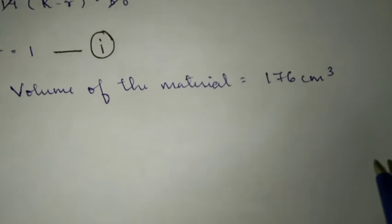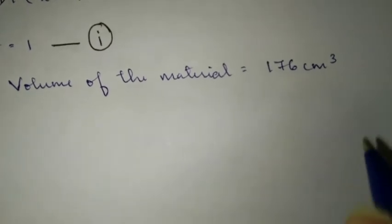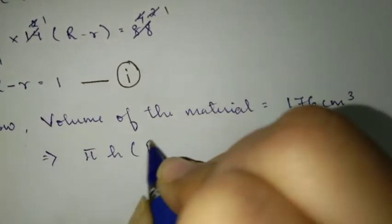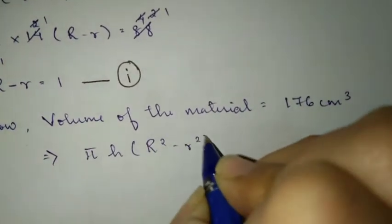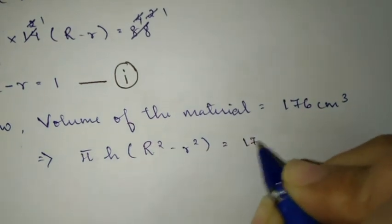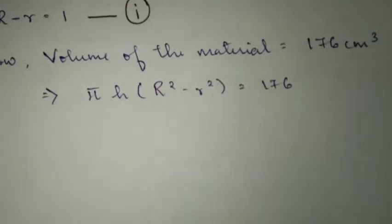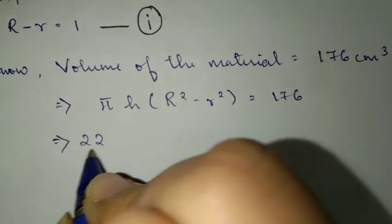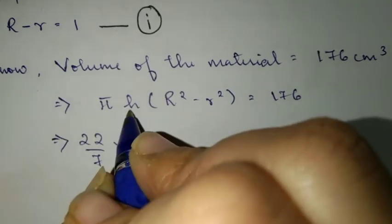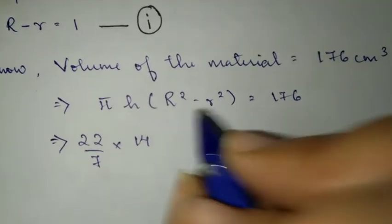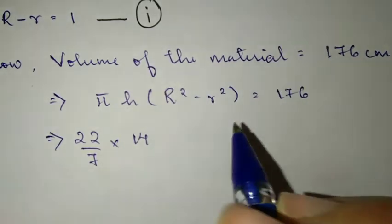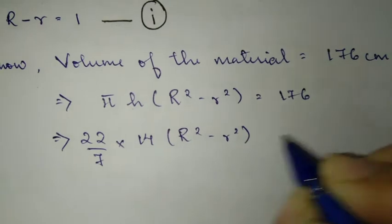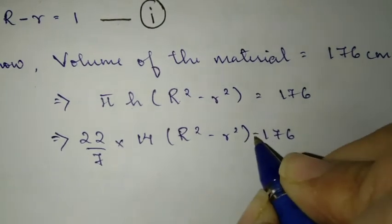So, volume of material formula: substitute it in. We have πH(R² - r²) equals 176. Now substitute π and H. So 22/7 times 14 times (R² - r²) equals 176.